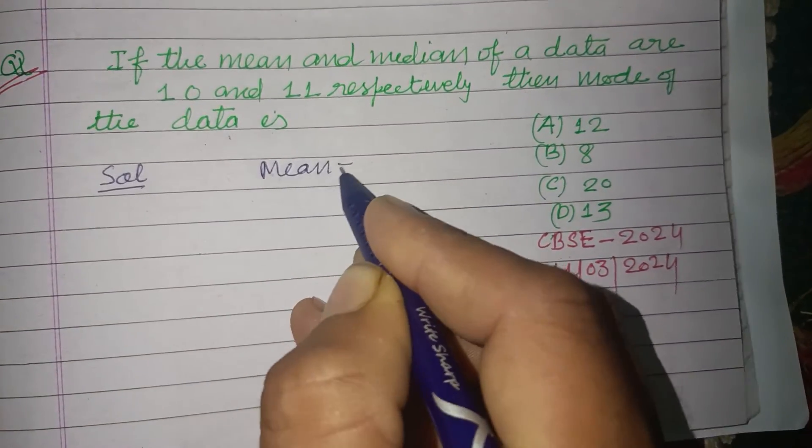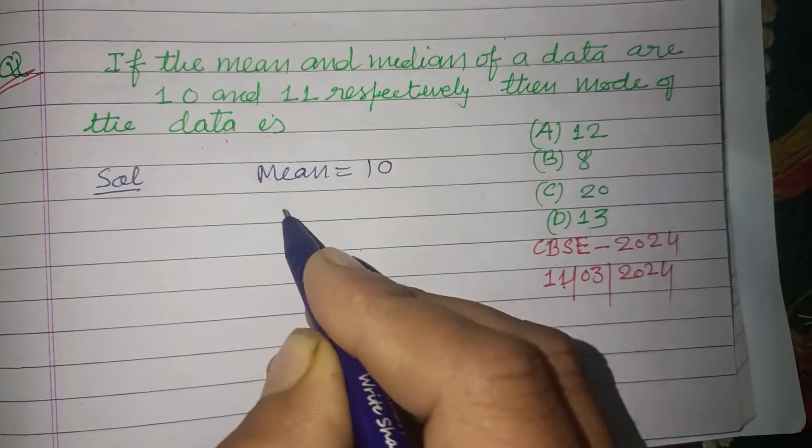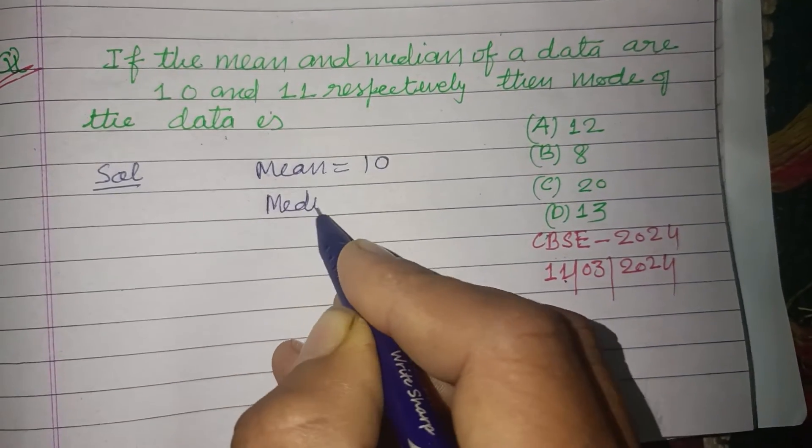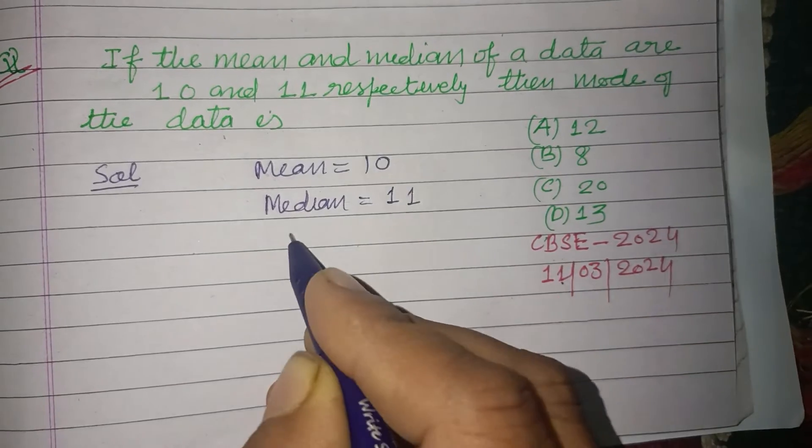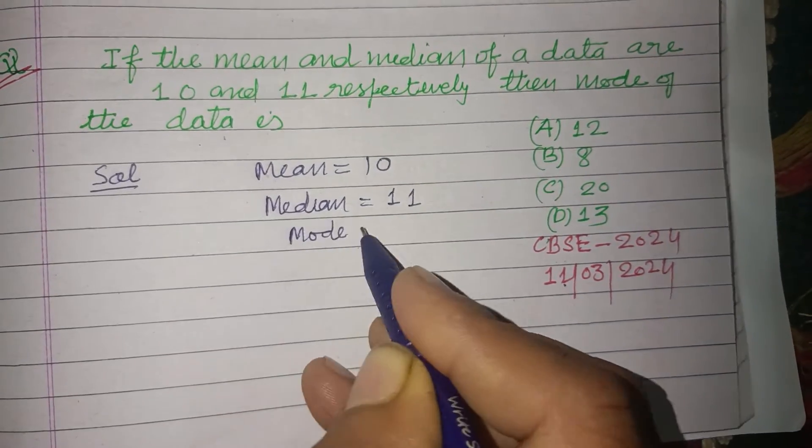Mean is given as 10. Median is given as 11. Mode is what we need to find in this question.